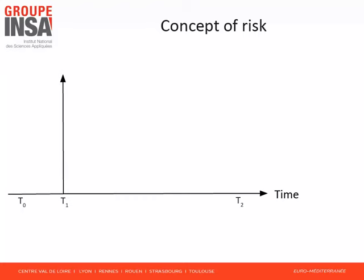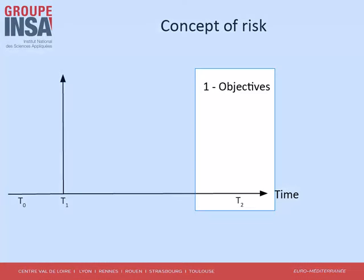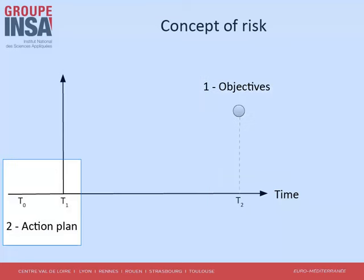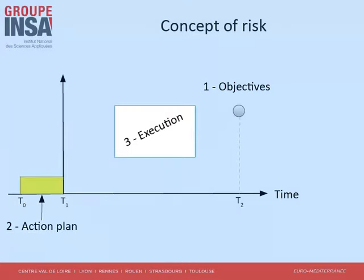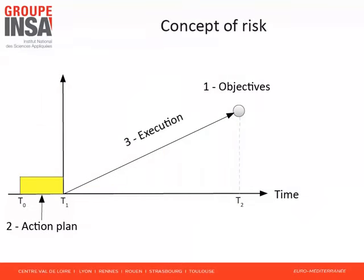To introduce the concept of risk in a simple way, let me set the scene. Many activities aim to impact the future. First, our expected objectives are specified. We plan for these objectives to be achieved at time T2. For instance, we want to arrive at Paris on day T2. Then actions have to be planned. The action plan aims to achieve the objectives. For instance, to visit Paris, I plan to fly from Beijing to Paris taking off at T1. Putting together an action plan takes time. The design starts at T0 and is completed at T1. Finally, the action plan is carried out from T1 to T2 and the objectives are reached. Speaking of risk requires the definition of objectives and an action plan for achieving these objectives. This is an imperative prerequisite.